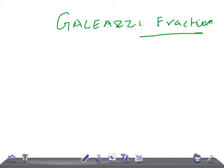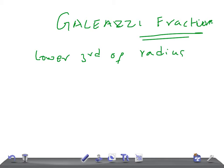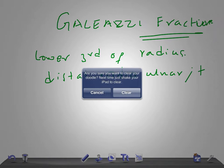Here in this type of fracture, you see a fracture of the lower third of the radius — it's a lower third of radius — with dislocation or subluxation of the distal radio-ulnar joint.